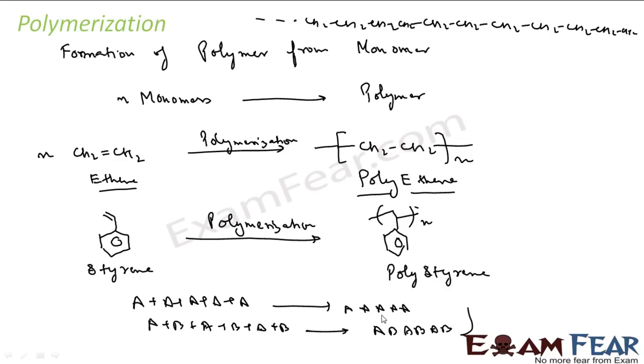There can be cross links also. We'll talk about different kinds of possibilities. Just understand that polymerization is the process of formation of polymers from monomers. In these two cases we saw that there is no byproduct, but there can be a byproduct also.